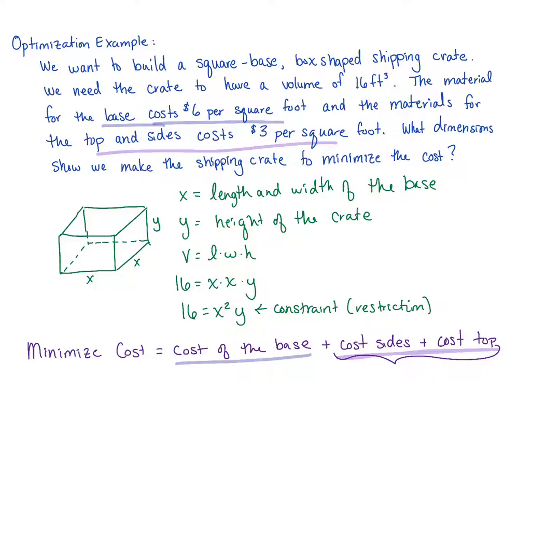The cost to make the base is going to be the area of the base times how much our materials cost, $6 per square foot, plus the cost of the sides and the top. The area of the base is x times x and the cost of our materials is $6 per square foot. Those square feet from our area cancel with our square feet in our cost and just leave us with a dollar amount. So the cost of our base is x times x times 6.